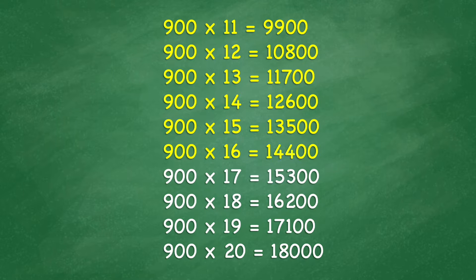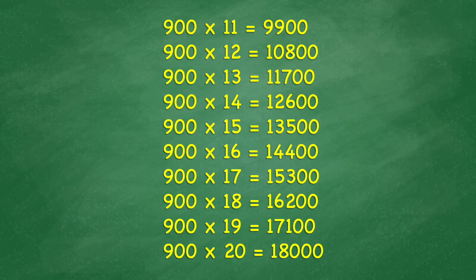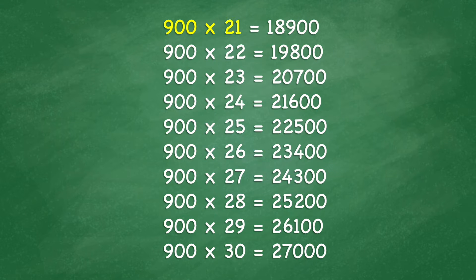900 times 16 equals 14,400. 900 times 17 equals 15,300. 900 times 18 equals 16,200. 900 times 19 equals 17,100. 900 times 20 equals 18,000. 900 times 22 equals 19,800. 900 times 23 equals 20,700. 900 times 24 equals 21,600.